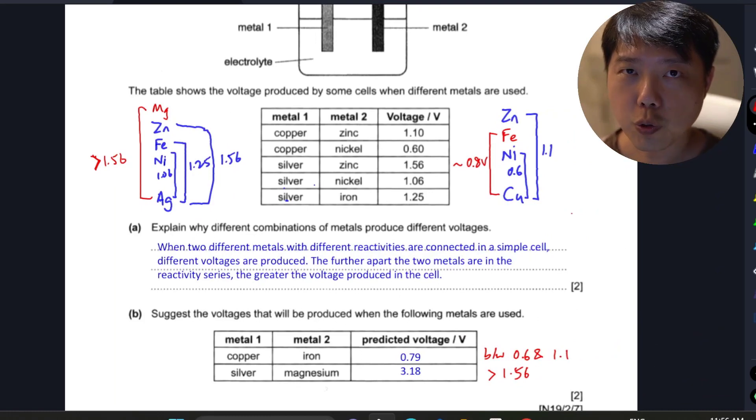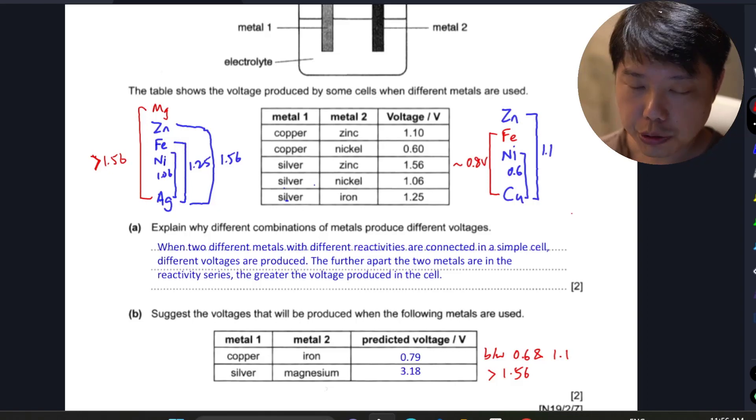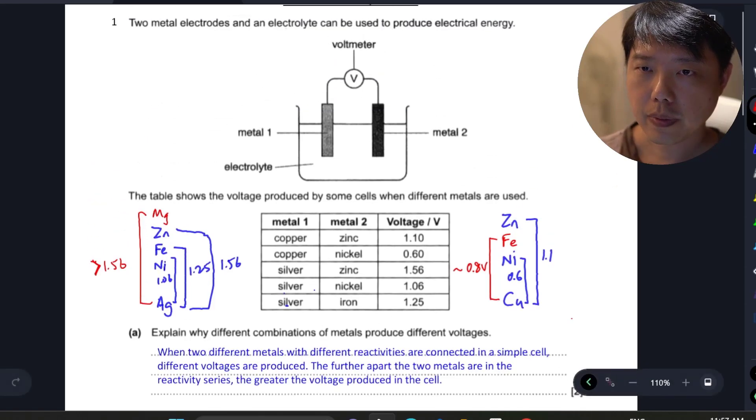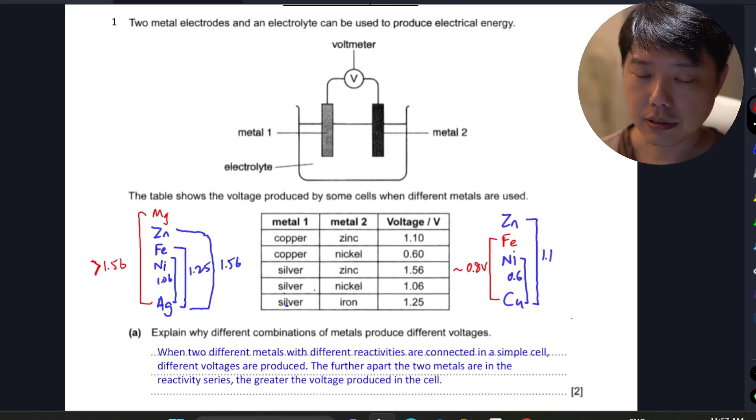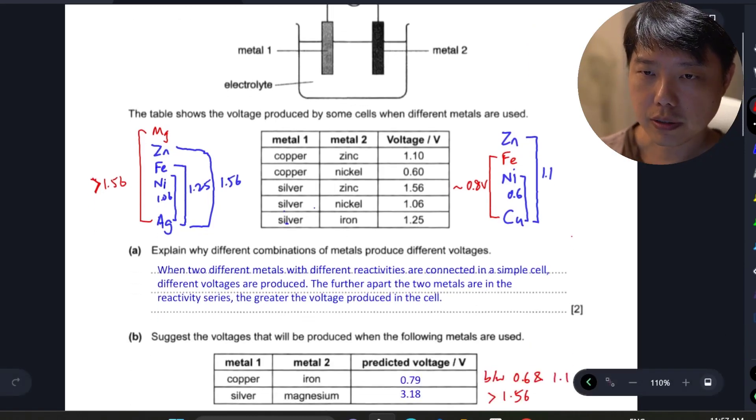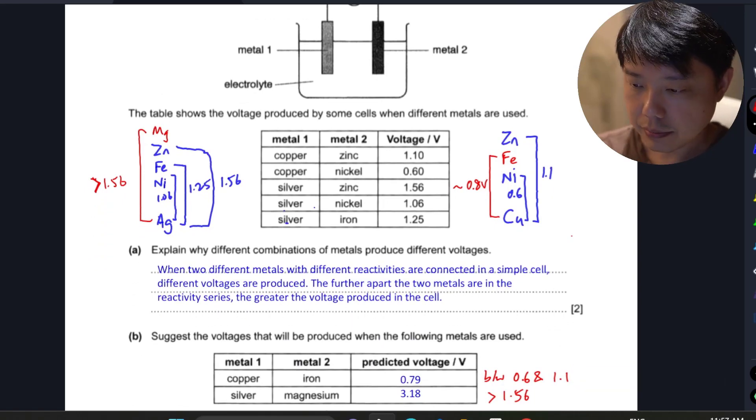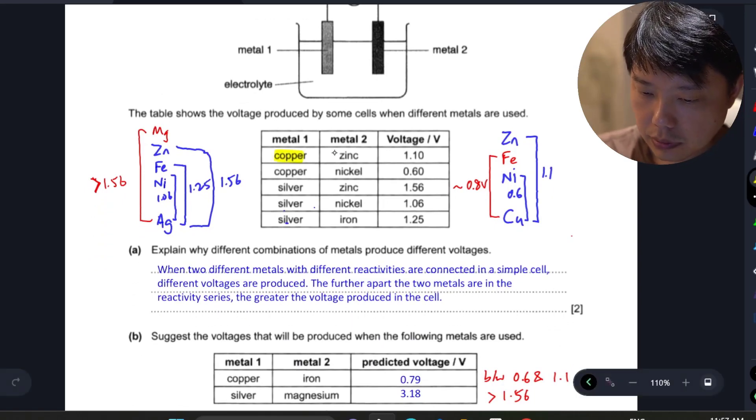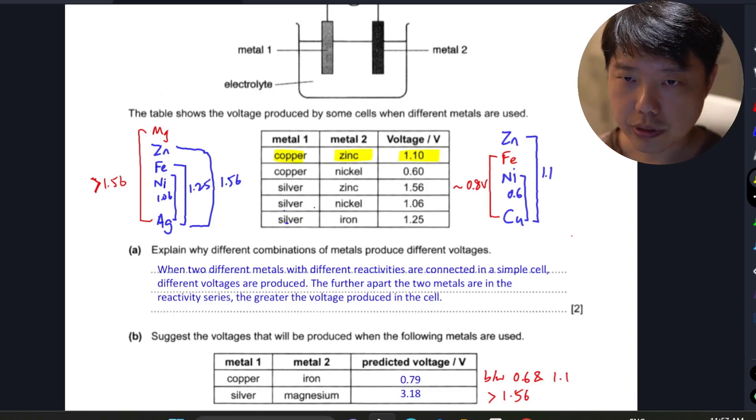Hi everybody, I want to go through this portion which I did with my class a couple of weeks ago. We're going through this 10-year series question on electrolysis. This table shows the voltage generated in a simple cell with two different metals. They list out some values - copper and zinc produces 1.1 volts, and so on.